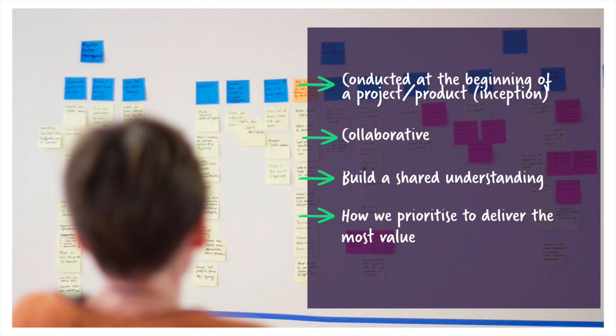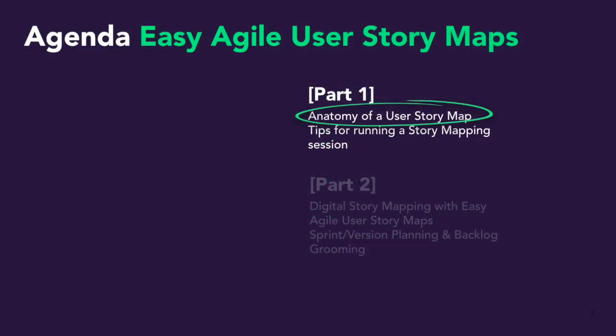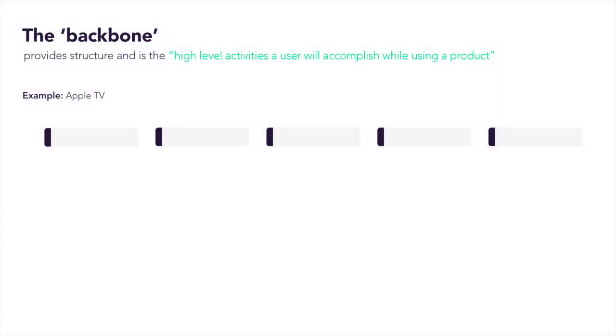It gives us a way to say: I'm currently working on building this user story and I can visualise what piece of the customer's journey this will be directly impacting. We've covered what a story map is in a general sense, and what I wanted to do now was break down the anatomy of a user story map. Then in part two of this series, we're going to bring this into the context of JIRA.